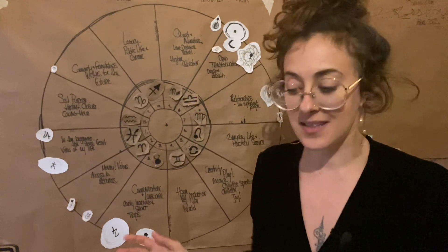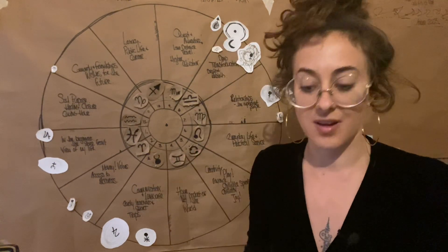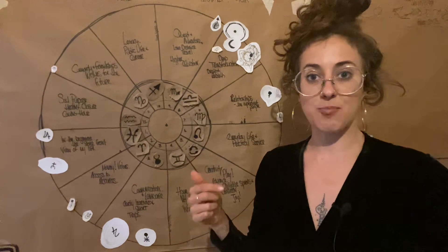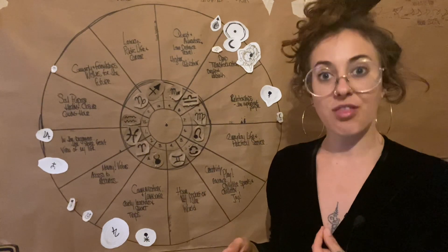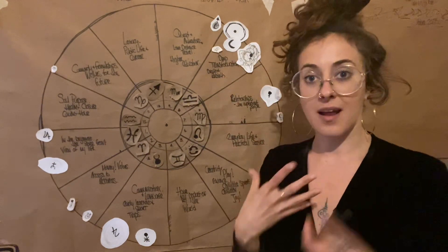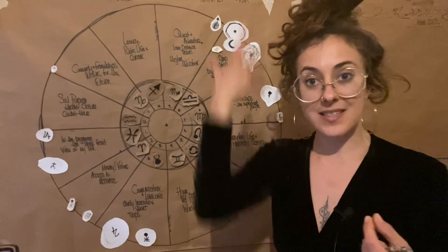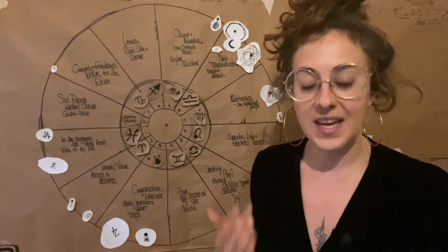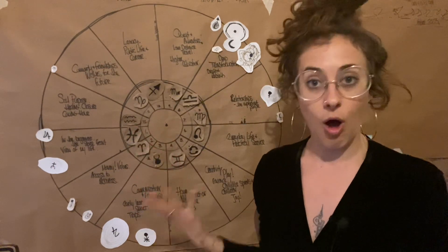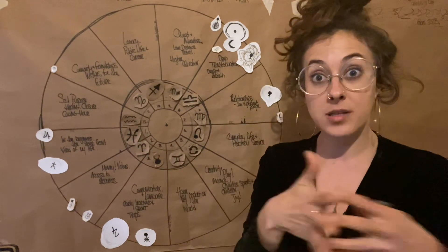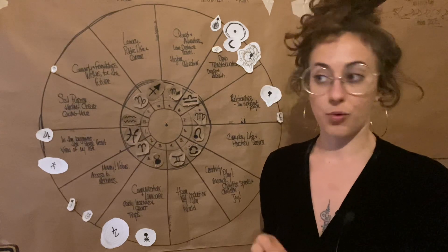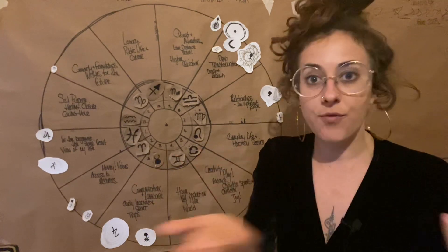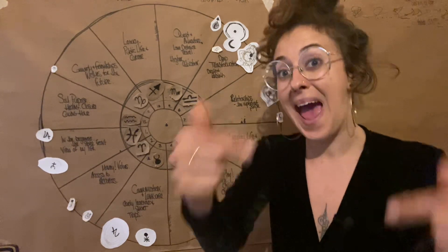I can differentiate between, okay this is my thought, this is my brain, this is an intrusive thought, this is the divine, this is my future self. I can differentiate between all of those because of all the work that I've had to go through, because of all the therapy and all of the blessings. And look at what is happening.